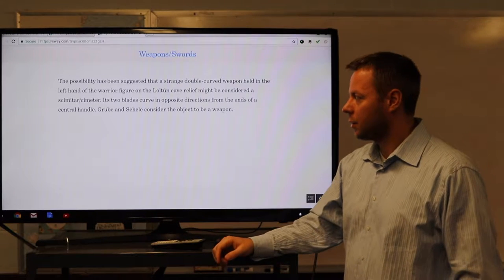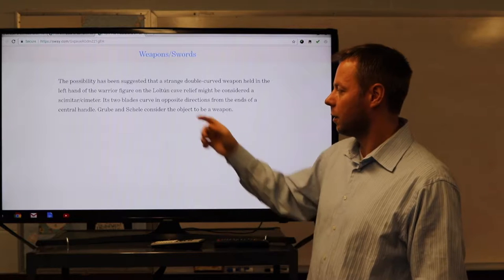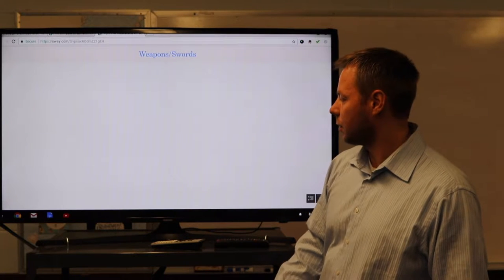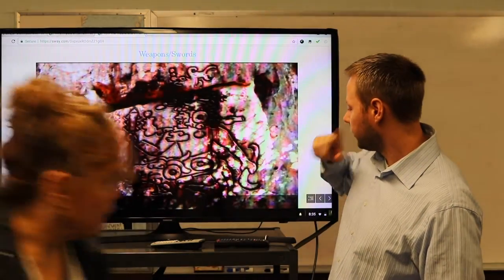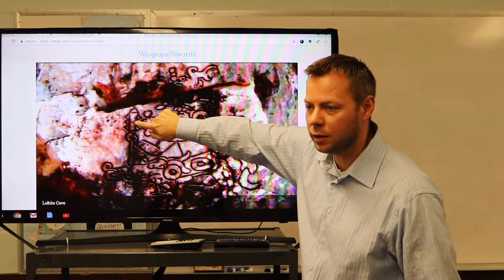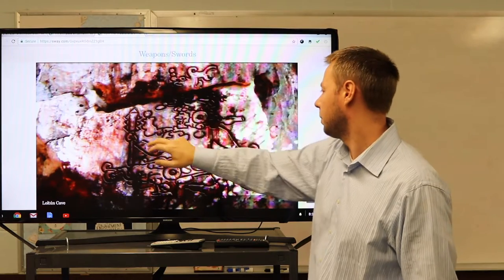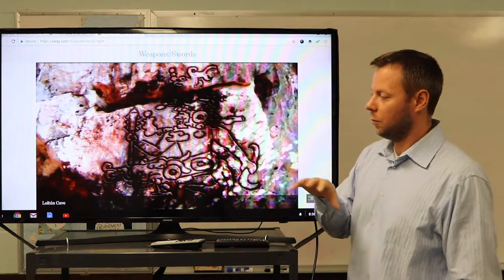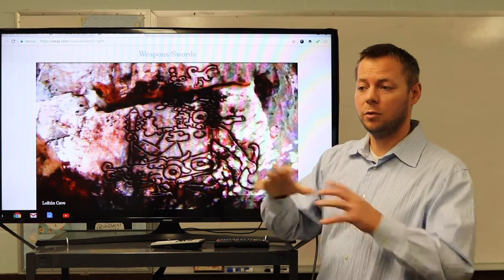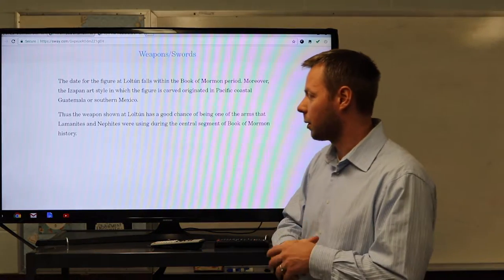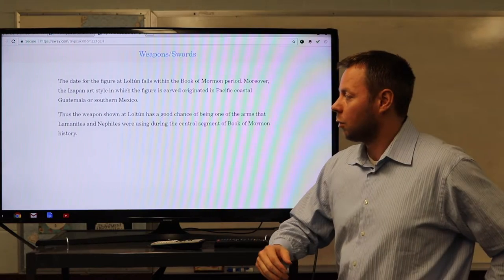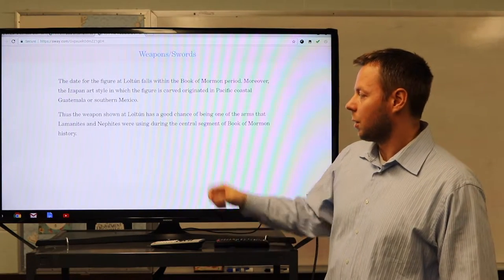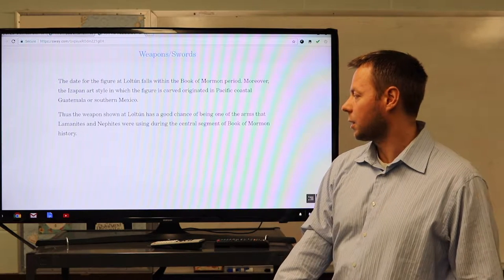The possibility has been suggested, though, that a strange double-curved weapon held in the left hand of the warrior figure in the Loltun cave relief might be considered a scimitar. Its two blades curve in the opposite direction from the ends of a central handle. Scholars consider the object to be a weapon. Here's what we're talking about. This is the Loltun cave. What does he have on this hand, right? This is a maquahuit. That's a sword, right? You see that one actually has a sharp tip on the sides. And this is what we're talking about here. See this curved weapon that he's holding in his other hand. Loltun caves would have been carved in Book of Mormon times from people from Kaminaljuyu, the Guatemala River that falls within Book of Mormon land. So the date for the figure of the Loltun falls within Book of Mormon period.